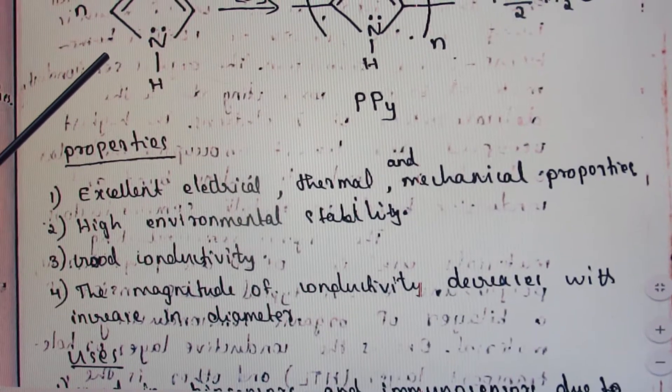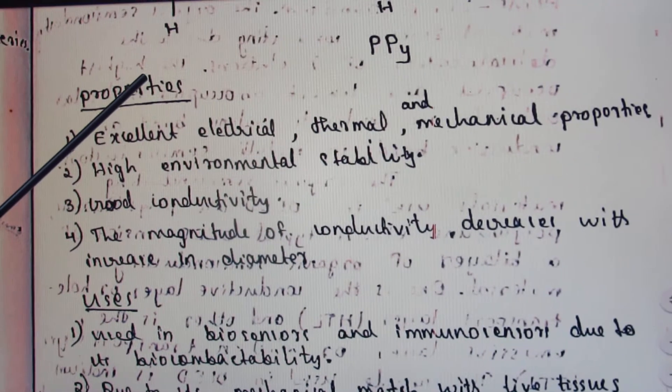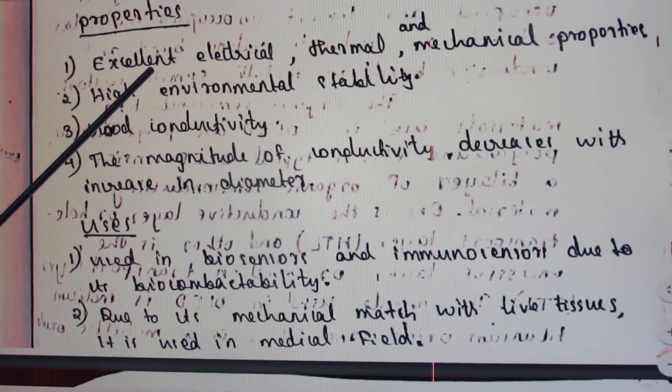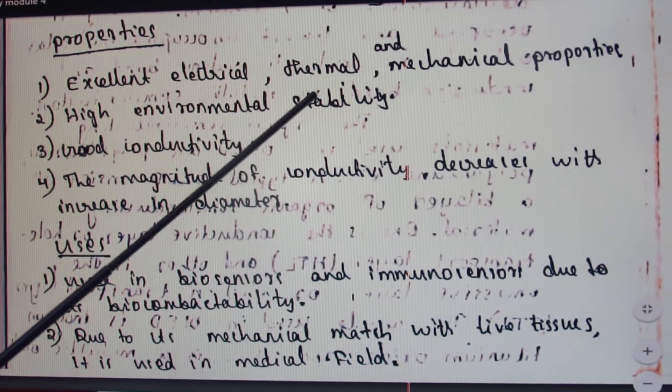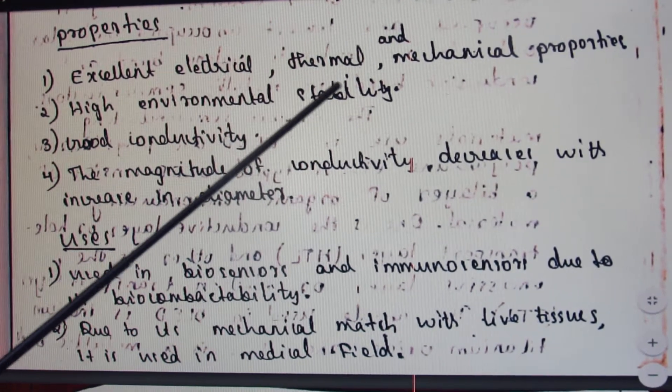Its structure is very important, like that of polyaniline. Moving to the properties of polypyrrole: it possesses excellent electrical, thermal, and mechanical properties, and high environmental stability.